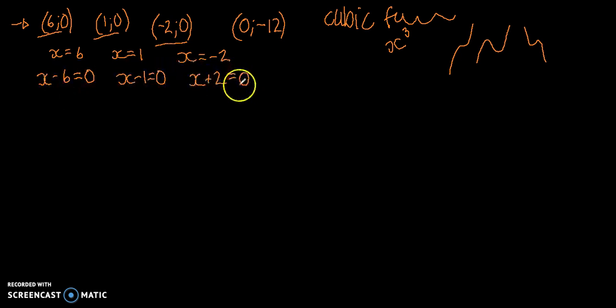And how would we have got to that step? Well, we would have had something that looks like this: x minus 6 in brackets, x minus 1 in brackets, and x plus 2 in brackets. So that's quite nice. It makes me feel quite good, actually. Now this isn't the function.